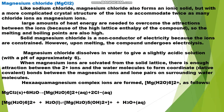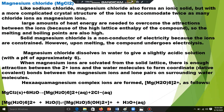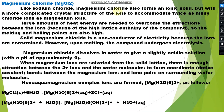Today we will discuss magnesium chloride and chlorides of third period elements. Like sodium chloride, magnesium chloride also forms an ionic solid, but with a more complicated crystal structure. The crystal structure must accommodate twice as many chloride ions, since magnesium has two chloride ions per magnesium ion, compared to sodium which has only one chloride per sodium ion.